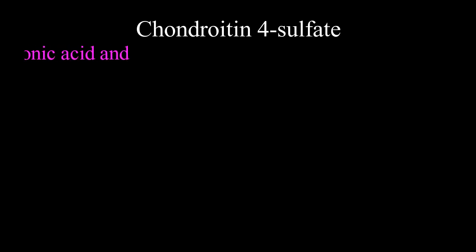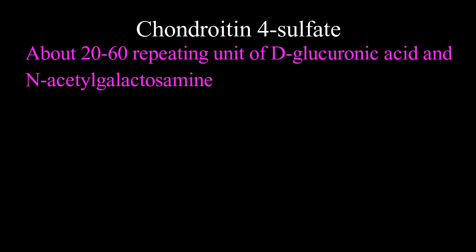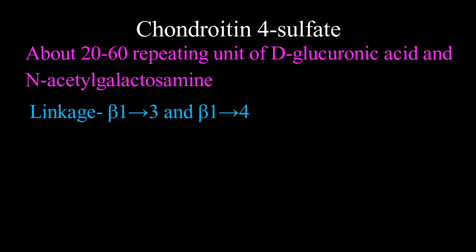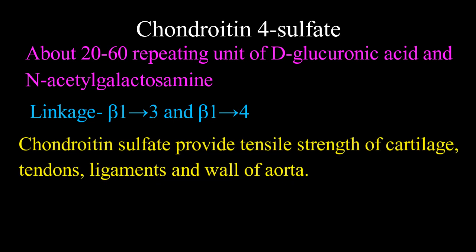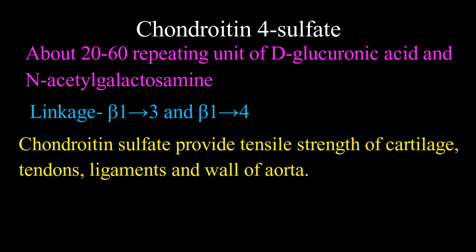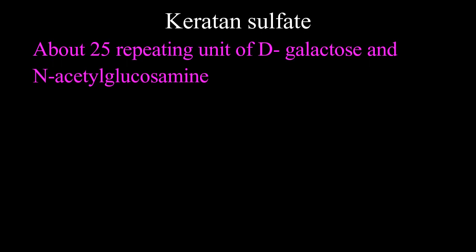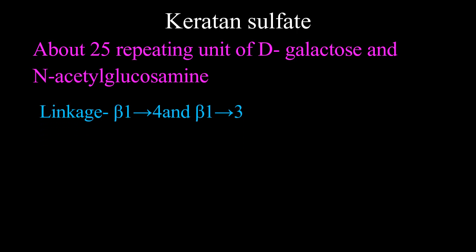Chondroitin sulfate consists of about 20 to 60 repeating units of D-glucuronic acid and N-acetylgalactosamine, held together by beta-1,3 and beta-1,4 linkage. Chondroitin sulfate provides tensile strength to cartilage, tendon, ligament, and wall of the aorta. Keratan sulfate consists of about 25 repeating units of D-galactose and N-acetylglucosamine, held together by beta-1,4 and beta-1,3 glycosidic linkages.